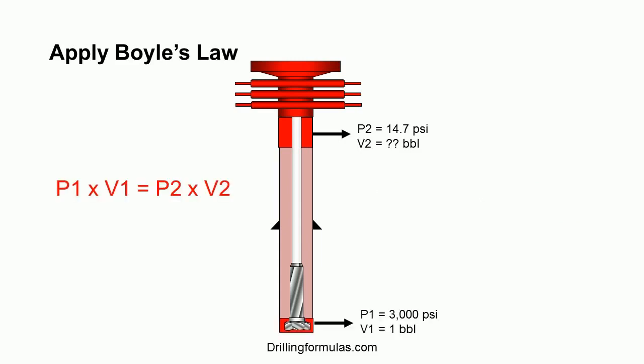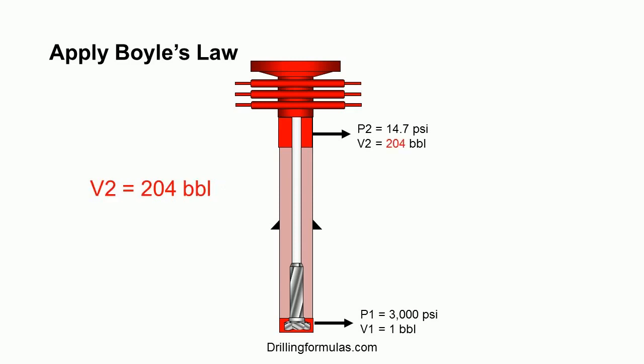As per Boyle's Law, P1 × V1 = P2 × V2. P1 is 3000 psi, V1 is one barrel, and P2 is 14.7 psi. We can solve for V2. V2 is equal to 204 barrels. We hope this example gives you an idea of how we can use Boyle's Gas Law for well control.